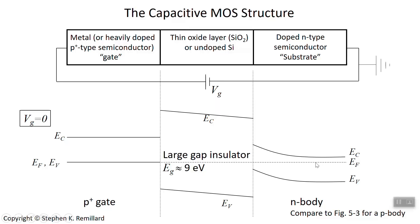In the gate — which is degenerately doped P-type — the Fermi level and the valence band are at the same level. For a degenerately doped N-type, the Fermi level would be up at the conduction band. But since it's P-type, the Fermi level sits at the valence band. That sets the band structure for the degenerate semiconductor gate.